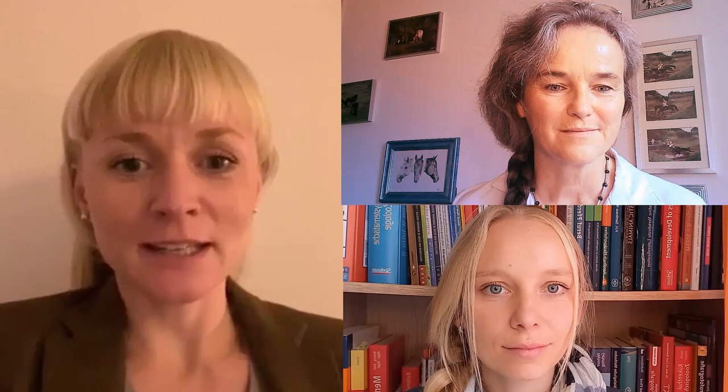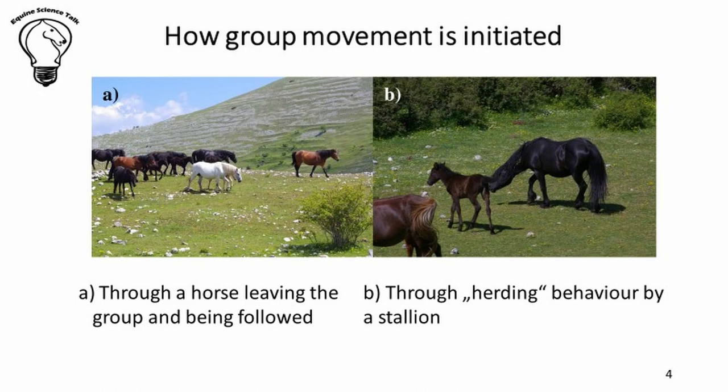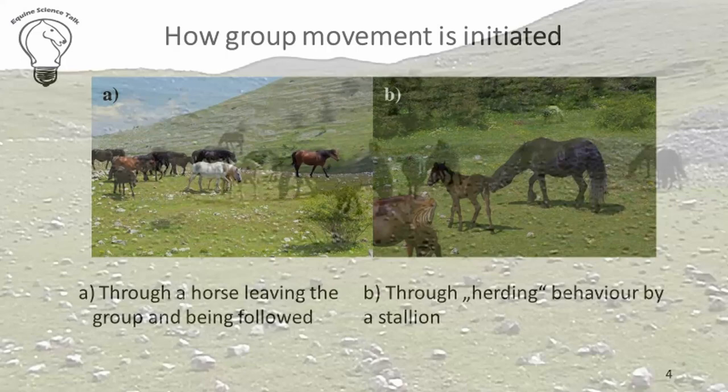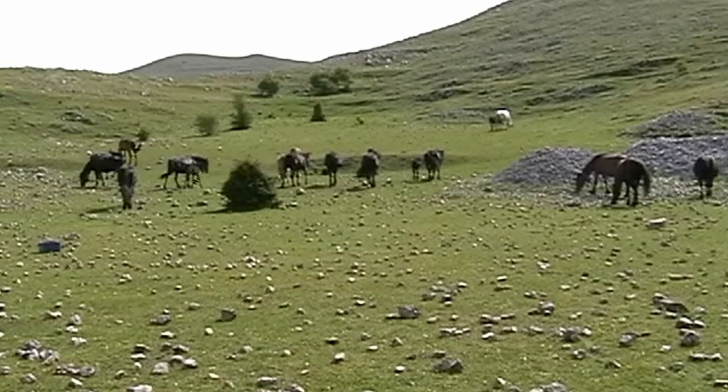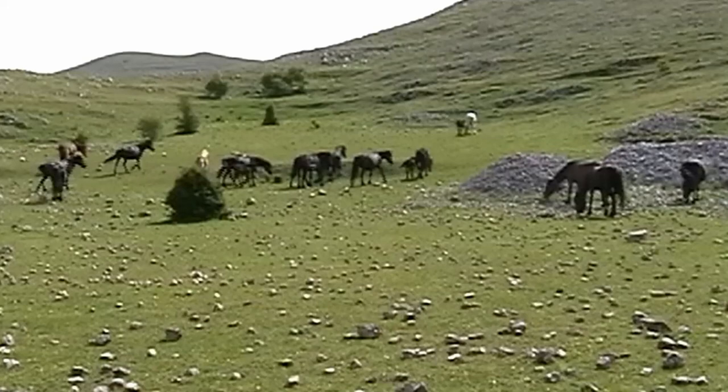Horses move around a lot, and that raises the question of how this is coordinated — what initiates a group movement. On the one hand, if one or a few individuals separate themselves from the group, the rest of the group decides whether to follow or not. Alternatively, movement can be initiated through driving or herding behaviour by the stallion. If the stallion senses a threat, he drives his mares together and away from the danger. There are often misunderstandings about the role of the stallion — he drives the mares together and protects them, but does not lead the group away.